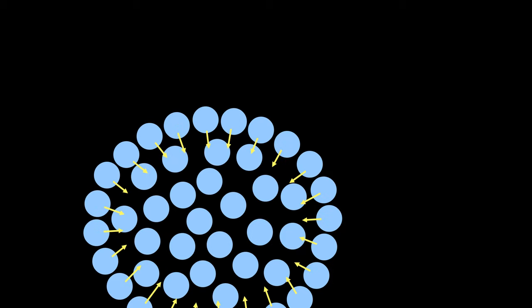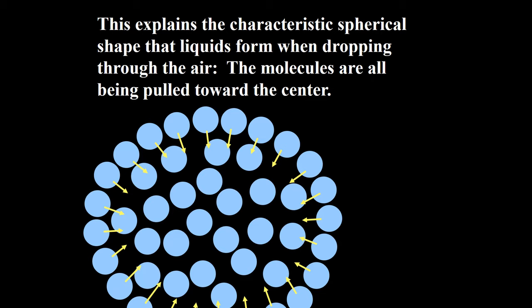What do you think surface tension would do to a liquid not confined in a container? In this model of a small water droplet, what is the net direction of the force on the surface molecules? That's right, it is toward the center, and so a free-falling drop of liquid takes on a spherical shape.